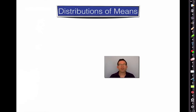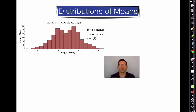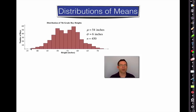Let's start with the distribution of means. A lot of people are very comfortable with the distribution of data. Take a look at that histogram — it represents 450 heights of 7th grade boys in inches. The mean height is 54, the population standard deviation is 6, there are 450 of them. They range in height from a minimum of around 37 up to a maximum of about 73.